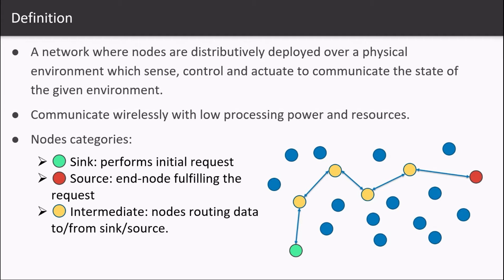An intermediate node, highlighted in yellow, is the one that routes the data to and from the sink and the source.